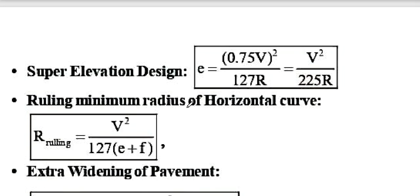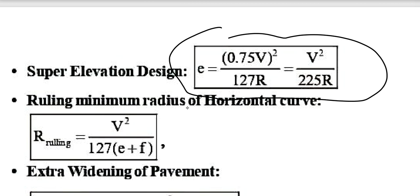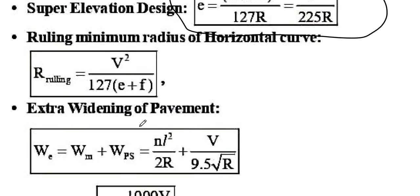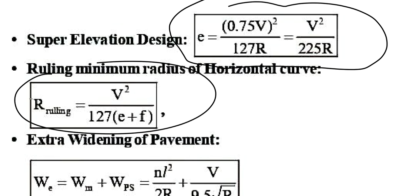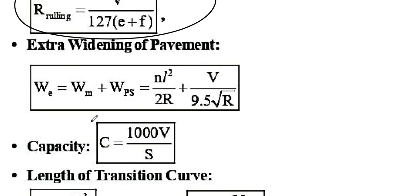For super elevation design, the formula is V²/225 for mixed traffic conditions (ruling). The minimum radius for a horizontal curve: R_ruling = V²/127(E+F). For extra widening, the mechanical widening formula is NL²/2R, and the psychological widening formula is V/9.5√R.